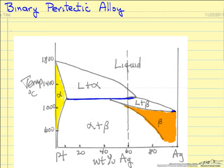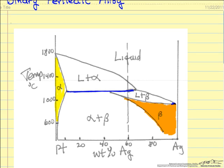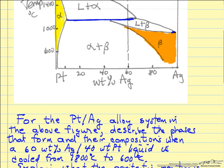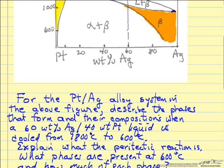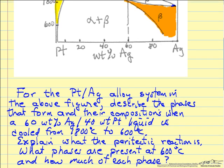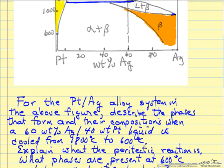In this example we are given a phase diagram for a platinum-silver alloy. We are plotting temperature in degrees centigrade versus weight percent of silver, and we have identified the various regions. The problem says to describe the phases that form and their approximate compositions when a 60-40 liquid is cooled from 1800°C to 600°C.